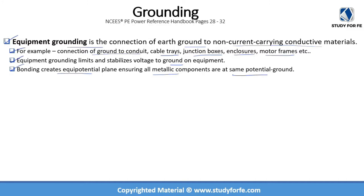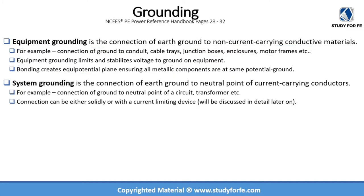This is a safety feature — we don't want the voltage on enclosures to rise, so that if you accidentally make contact with a live enclosure you don't get an electric shock. System grounding is a connection of earth ground to the neutral point of current-carrying conductors — for example, connection of ground to the neutral point of a circuit or a transformer. The connection can be either solid or with a current-limiting device, which will be discussed in the last lecture of this series covering ungrounded, grounded, low-resistance grounded, and high-resistance grounded systems.